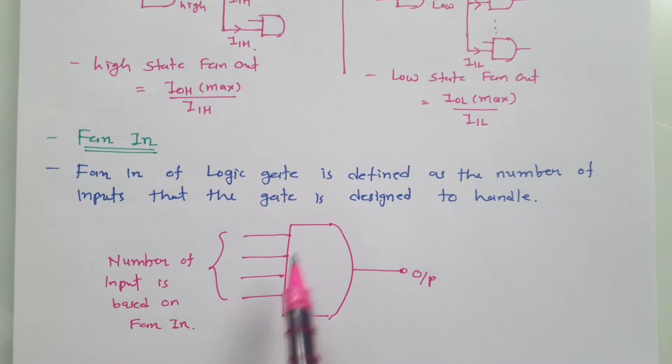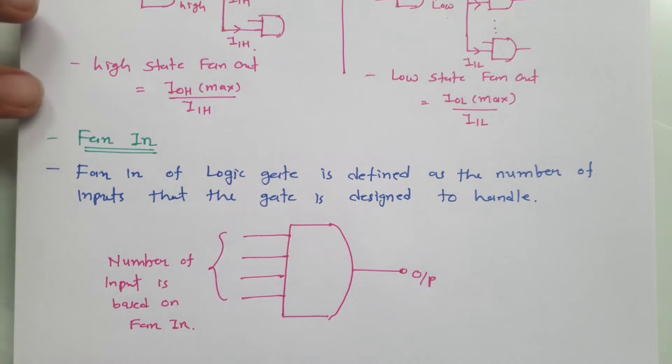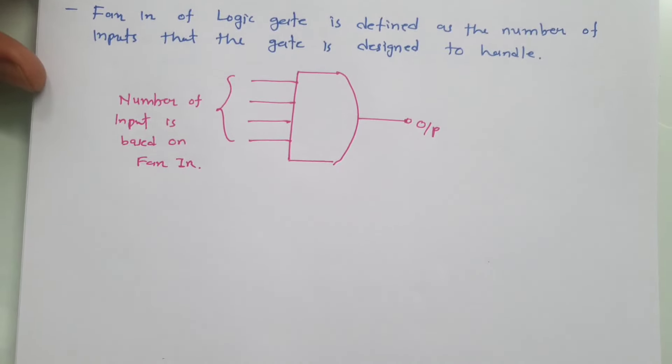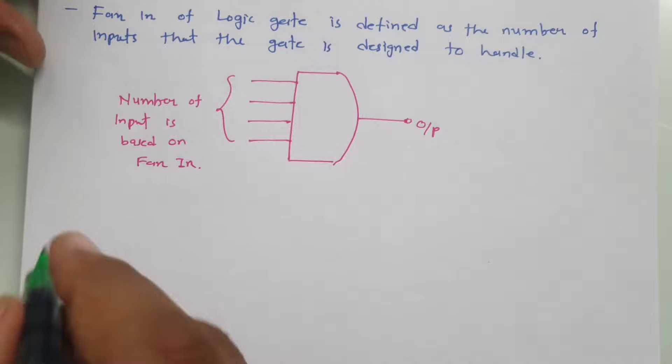The number of inputs of logical gate is based on fan-in. Now I will explain you third very important parameter of digital integrated circuit, that is operating temperature.